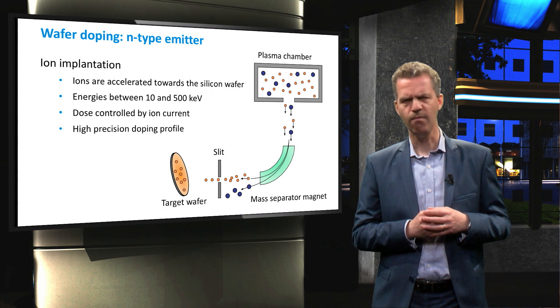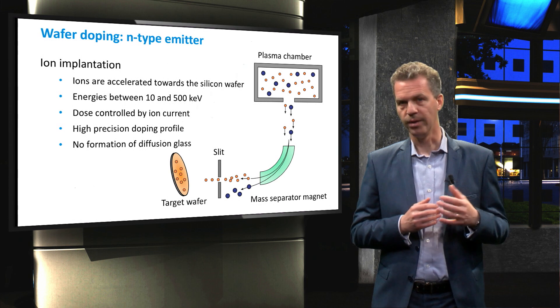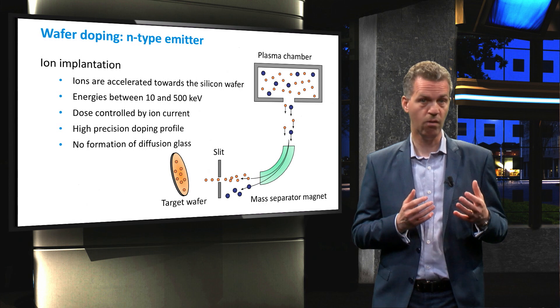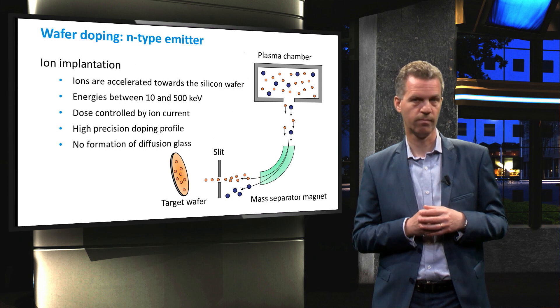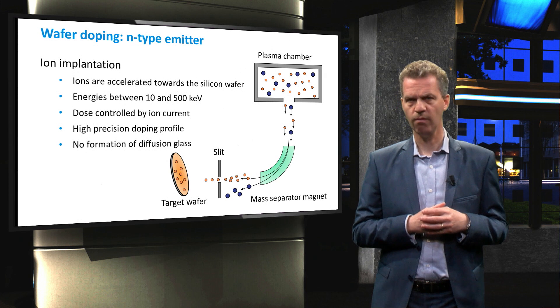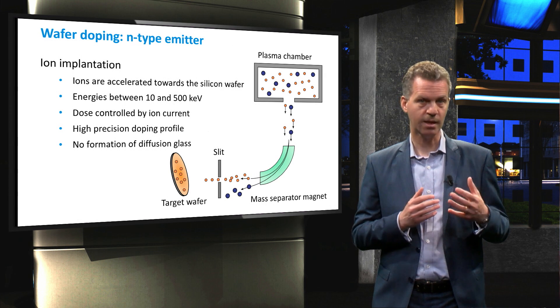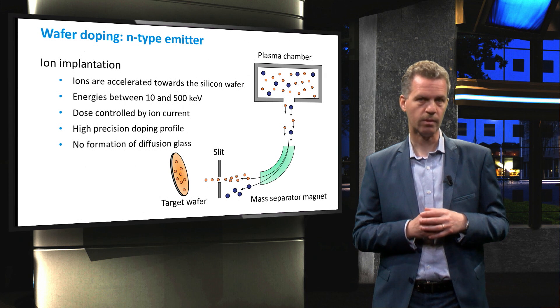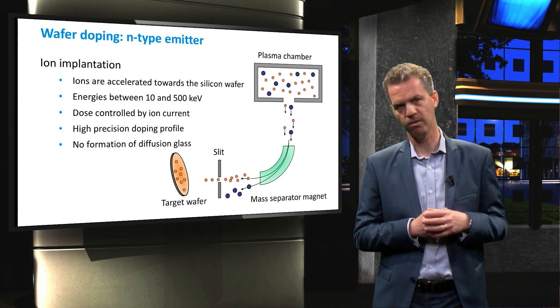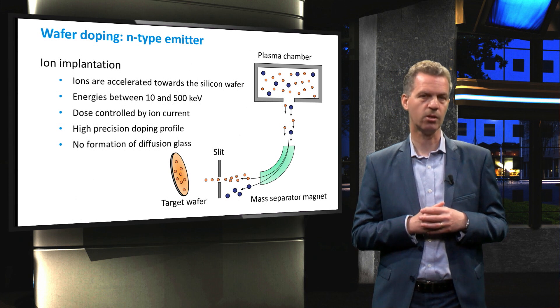In this way, a very precise doping profile can be obtained. Another advantage is that there is no need for an etching process, since there is no formation of a diffusion glass. However, the downside of this technique is that the surface of the wafer is damaged by the ion bombardment, creating a high defect density. Therefore, the wafers must be heated in a furnace for a set amount of time to restore this damage. This heating process is called annealing.